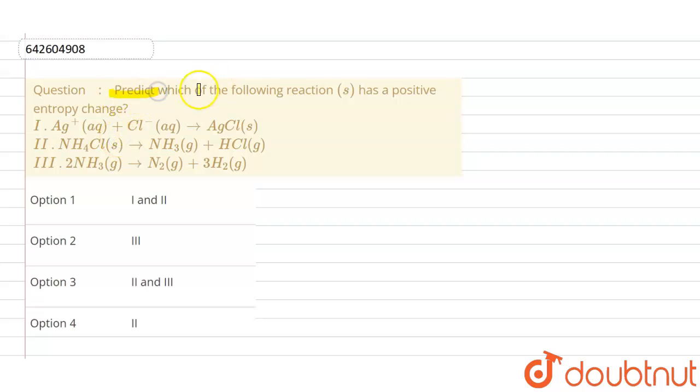asking that predict which of the following reaction has a positive entropy change. So what is basically entropy? If I'm talking about entropy, then it is a degree of randomness or disorderness. And for that we will use the expression delta ng. What is delta ng? This is the number of moles of product minus number of moles of reactant for gaseous state.